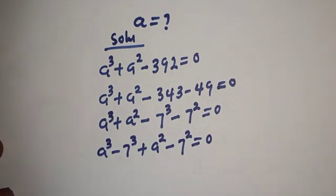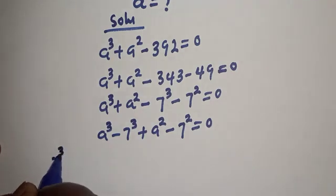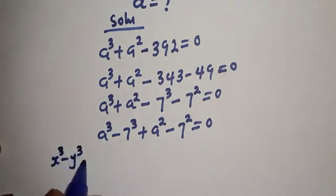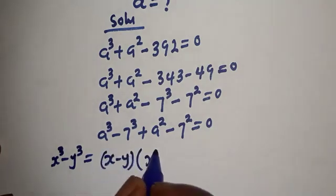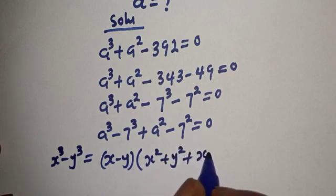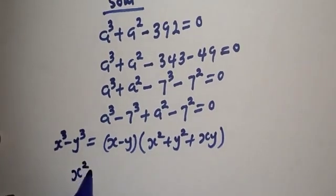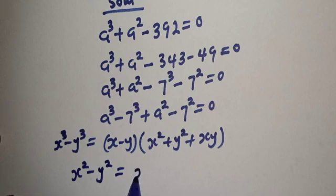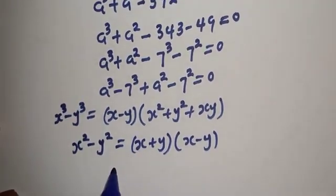Take note of these identities: if you have s raised to power 3 minus y raised to power 3, this equals (s minus y)(s squared plus y squared plus sy). And also if you have s squared minus y squared, this equals (s plus y)(s minus y).